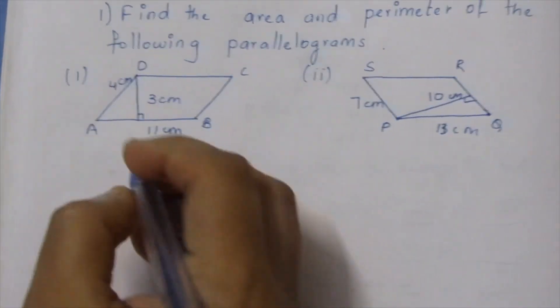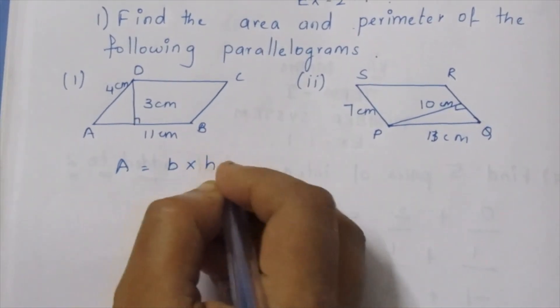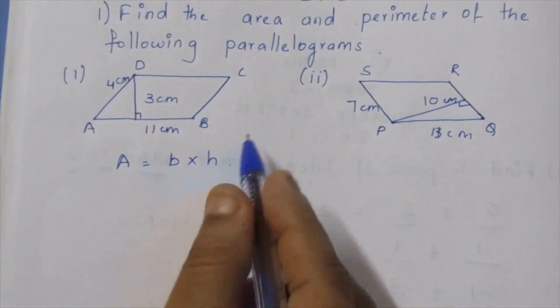Formulas: Area of a parallelogram formula is base into height. Perimeter: add all boundaries.